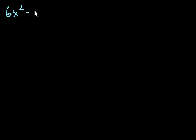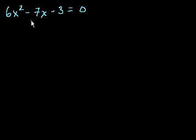But this is going to be a hairier problem. So let's say I have 6x squared minus 7x minus 3 is equal to 0. You could try to factor it, but personally I don't enjoy factoring things when I have a coefficient on the x squared term. You could divide both sides by 6, but then you'd get fractions, which are even worse to factor by inspection. You could do the quadratic equation — and the quadratic equation is essentially completing the square, just a shortcut formula to remember.